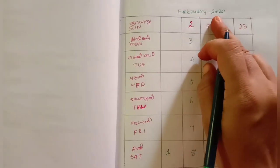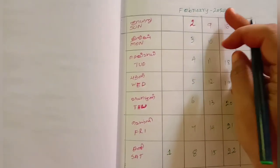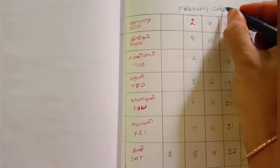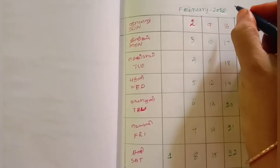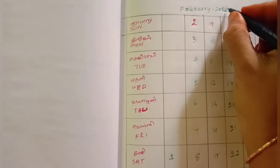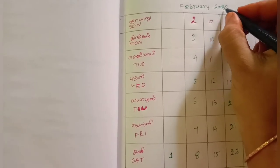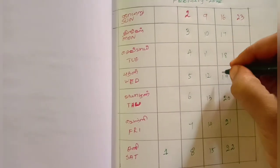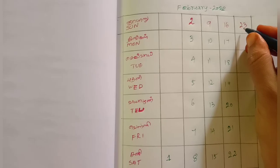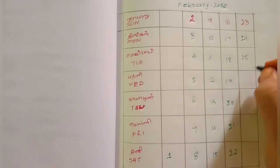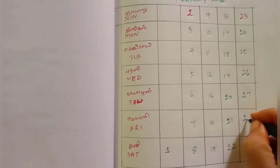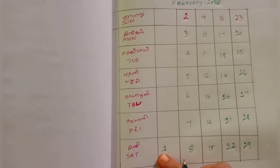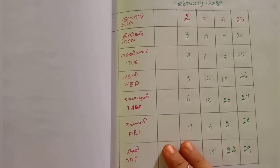February 2020 — we check whether 2020 is a leap year. Dividing 2020 by 4 gives no remainder, so 2020 is a leap year. Therefore February has 29 days. We fill in the calendar up to 29. The month of February starts on Saturday and ends on Saturday.